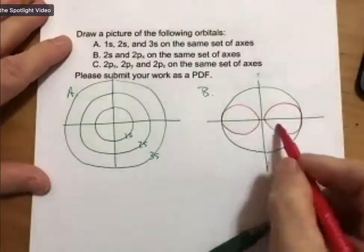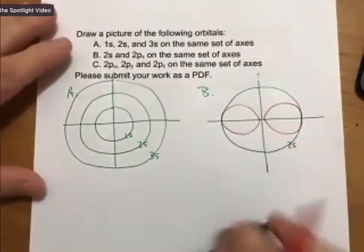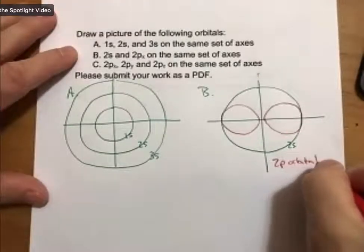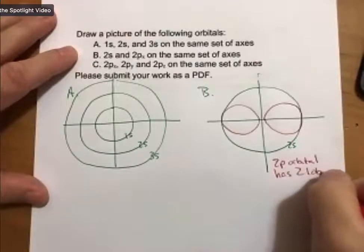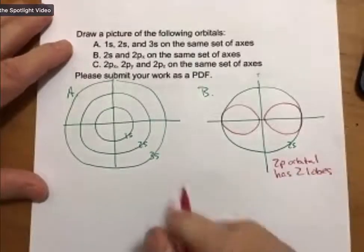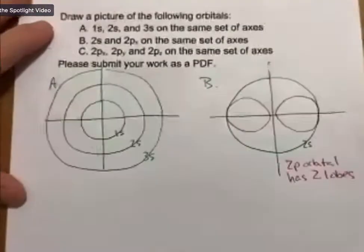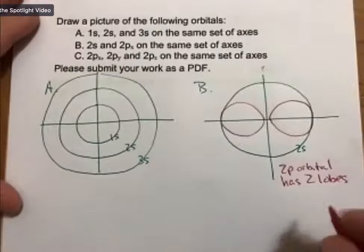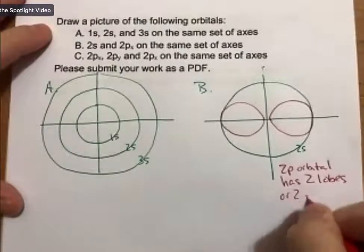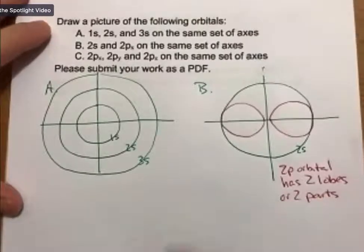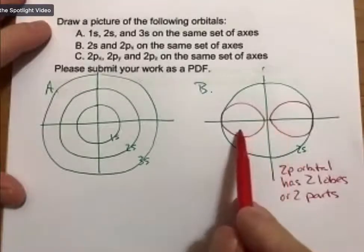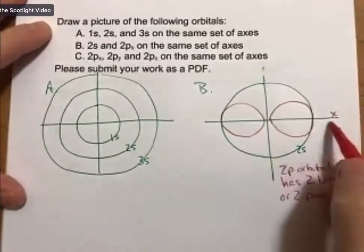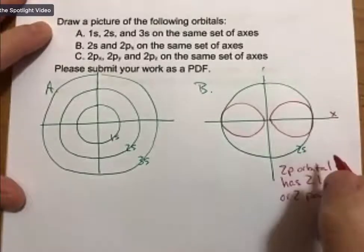A 2p orbital has two lobes, two lobes or two parts. I'm going to zoom in here and see if we can get a slightly better focus on this. Two lobes or two parts, and this is one orbital. I'm going to call this the x-axis here, and because of that, this is going to be 2px.